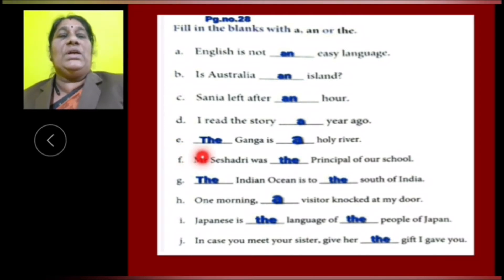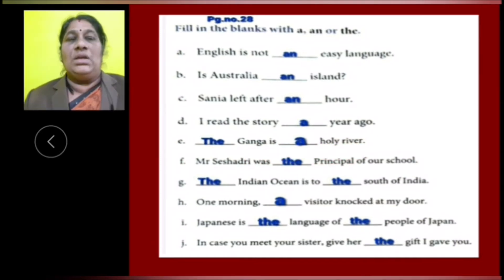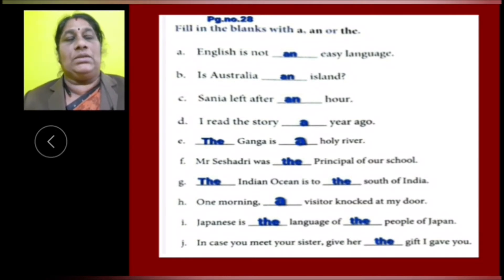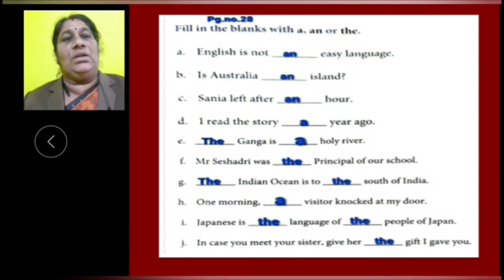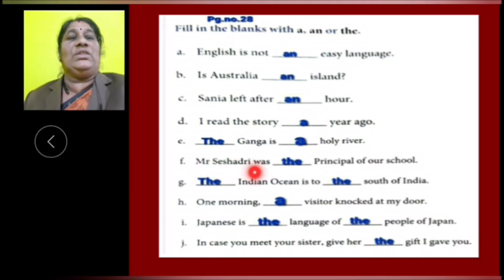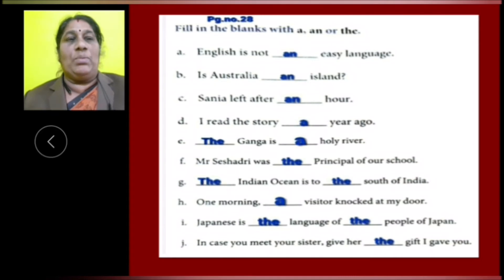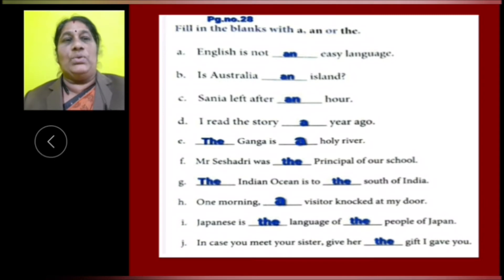E: The Ganga is a holy river. Here, the Ganga is the name of a river, so we have to use article THE. And 'a holy river' — holy is a consonant letter word, so we have to use article A. F: Mr. Sheshadri was the principal of our school. We are talking about the principal — that is a particular person, so we have to use THE.